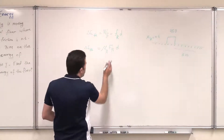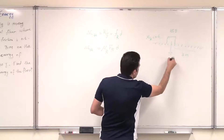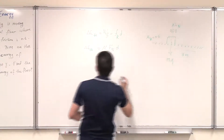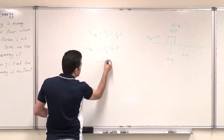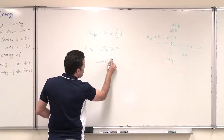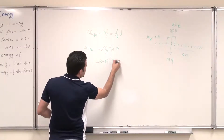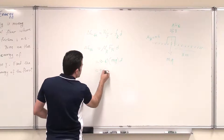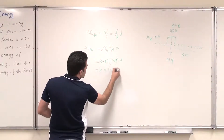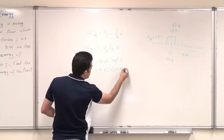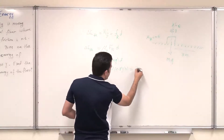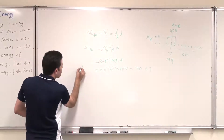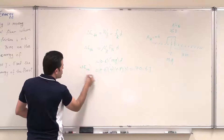The normal force equals Mg because it's a horizontal floor. So I have 0.6 multiplied by the normal force, which is mass times g, so 0.6 × 4 × 9.8 × 3 meters. This yields a value of 70.6 joules. So this is the total increase in thermal energy.